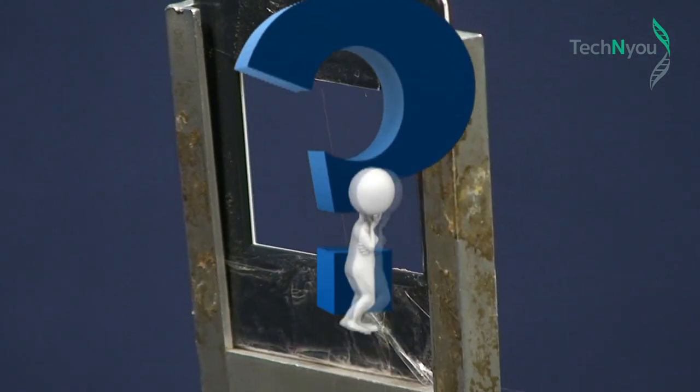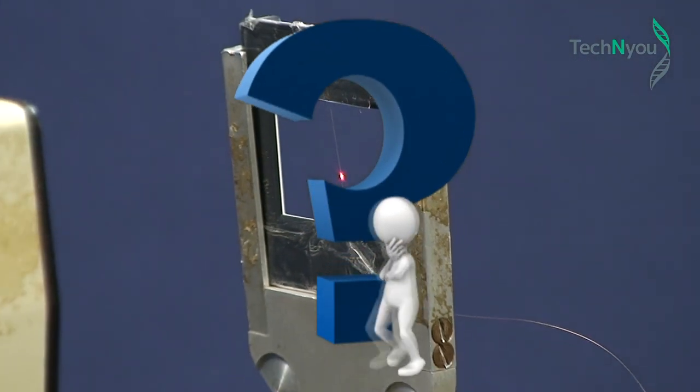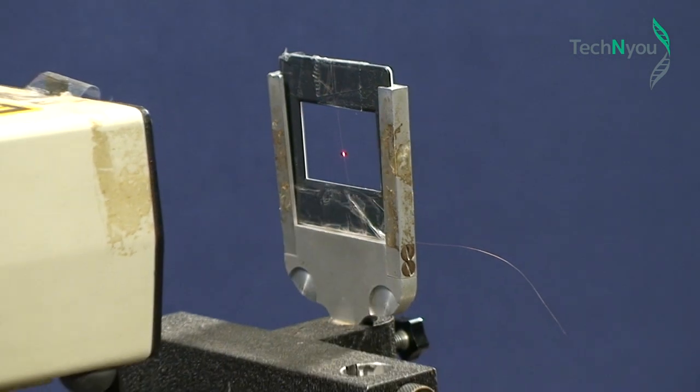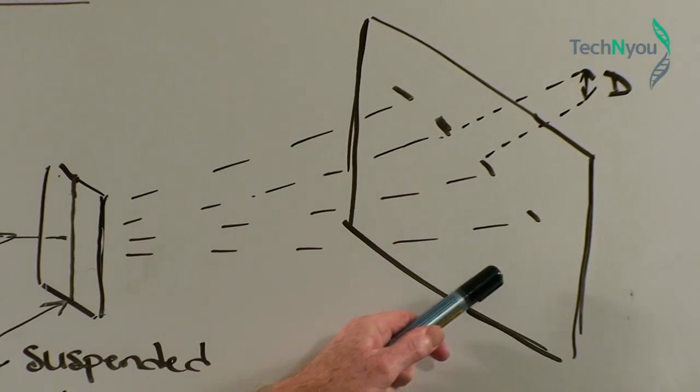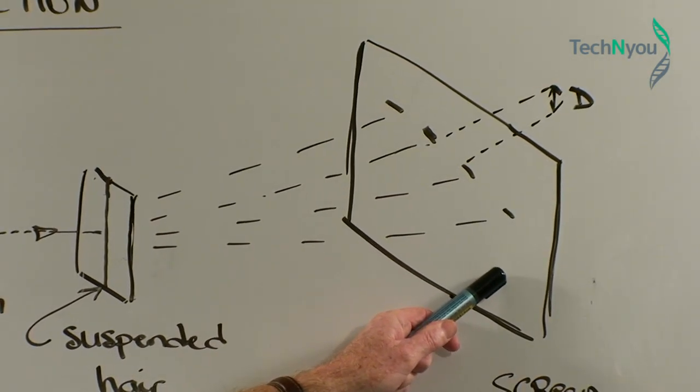So, where do we go from here to find out the diameter of the hair? It's really just simple physics. First, we measure the distance from the suspended hair to the whiteboard in centimetres.